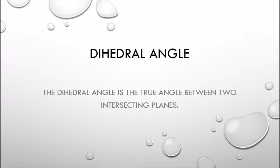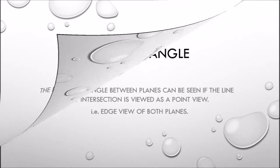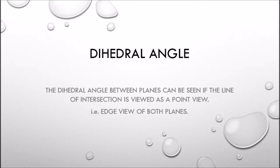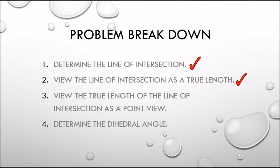The dihedral angle is the true angle between two intersecting planes. The dihedral angle between planes can be seen if the line of intersection is viewed as a point view, i.e. edge view of both planes.